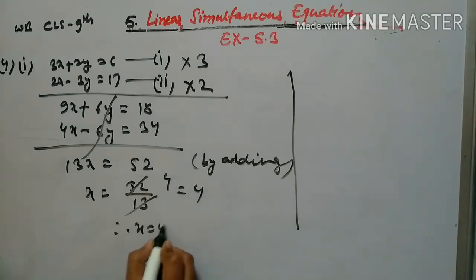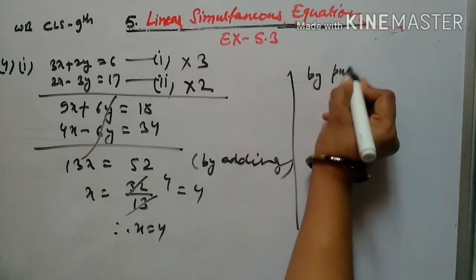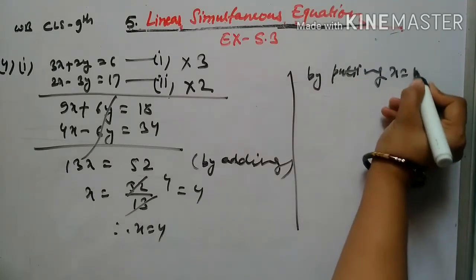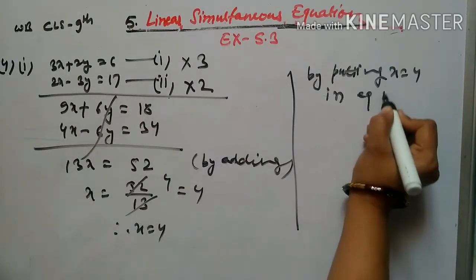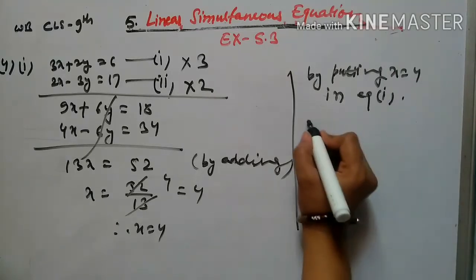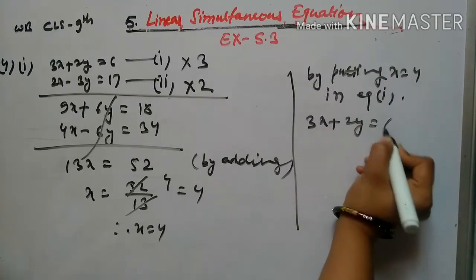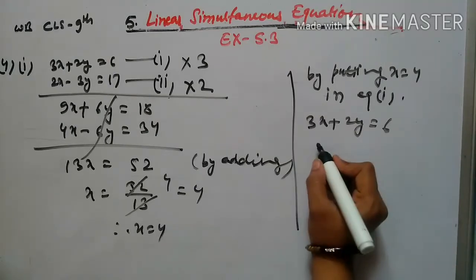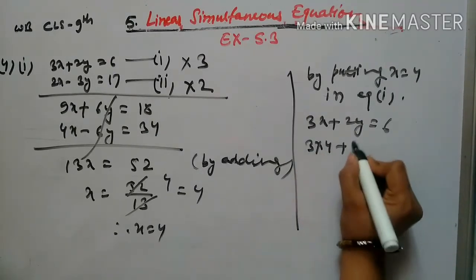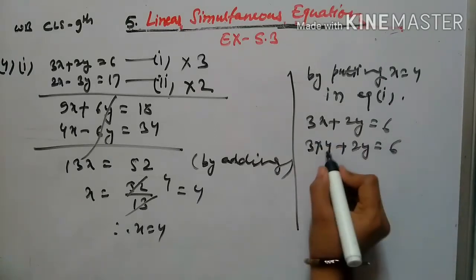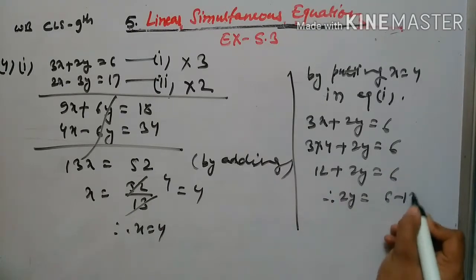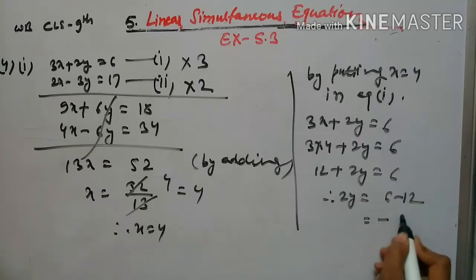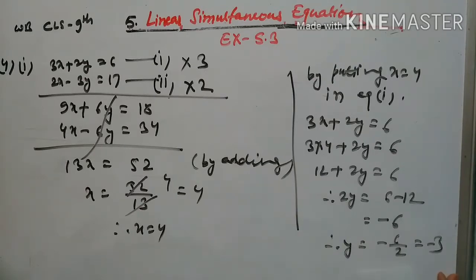Now we put x = 4 into equation 1: 3x + 2y = 6. Substituting: 3 × 4 + 2y = 6, so 12 + 2y = 6, that is 2y = 6 - 12 = -6, therefore y = -6 ÷ 2 = -3. The value of y is -3.